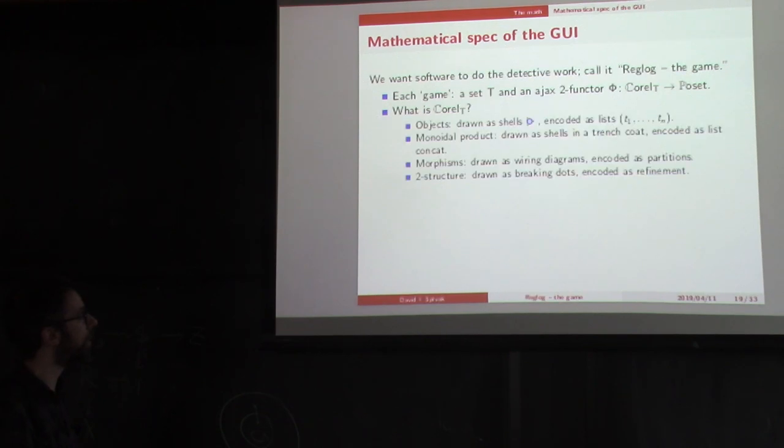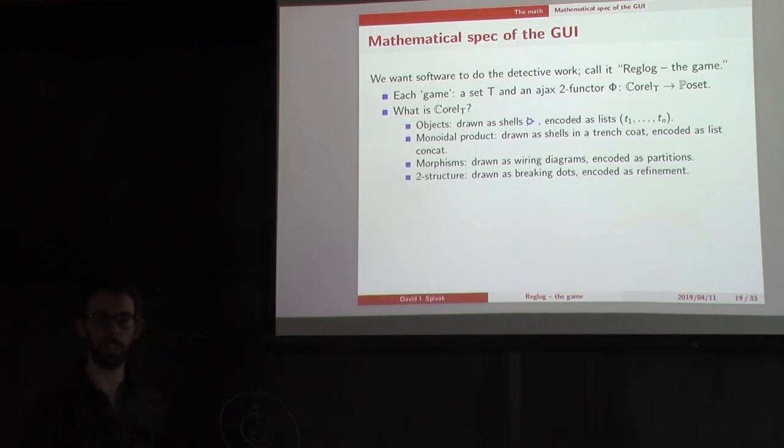So we want software that will do this detective work, and we're going to call it Riglog of the Game. Each game would be a set T and an Ajax 2 functor from co-rel to post-set. How would you specify it in this program if someone was going to make this? An object in co-rel T is going to be drawn as a shell, and it's going to be encoded as a list. The monoidal product will be drawn as shells in a trench coat or just shells in a wiring diagram, and it'll be encoded as list concatenation. Morphisms are going to be drawn as wiring diagrams, but they'll be encoded as partitions. And the two structure will be shown as breaking dots, but it'll be encoded as partition refinement.